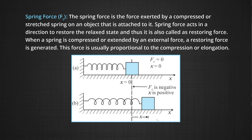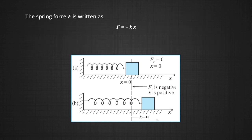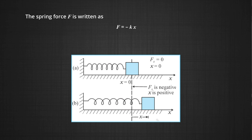When spring is compressed or extended by an external force, a restoring force is generated. This force is usually proportional to the compression or elongation for small displacements. The spring force F is written as F equals minus kx, where x is the displacement and k is the force constant. The negative sign denotes the force is opposite to the displacement from the unstretched state.